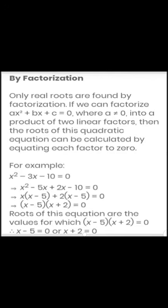By factorization method, this method is also known as splitting method. In this method, we split the middle term or coefficient of x such that the multiplication of there are two parts is equal to the multiplication of a and c means coefficient of x² into constant term.